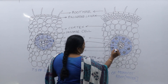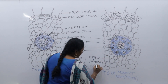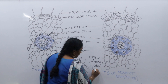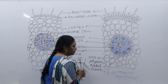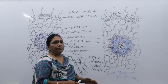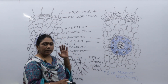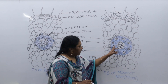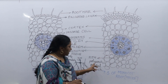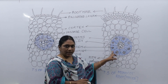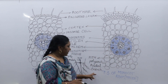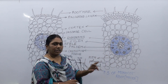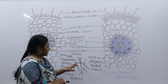In monocot root: xylem and phloem are arranged at different radii so the arrangement is radial. Protoxylem faces outward (toward the periphery), not toward the center, so the arrangement is exarch. The arrangement is therefore polyarch, radial, and exarch.